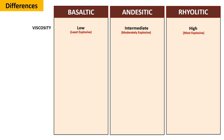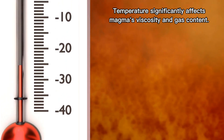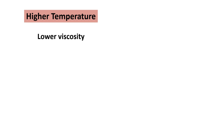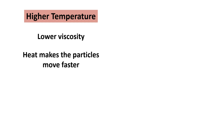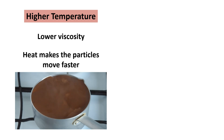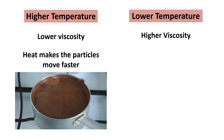Now, let us move on to the temperature of magma. Temperature significantly affects magma's viscosity and gas content. The higher the temperature, the lower the viscosity, because the heat makes the particles move faster, just like heating chocolate at a higher temperature making it less viscous or thin. Conversely, at lower temperatures, the viscosity increases.